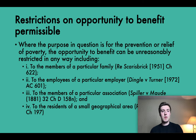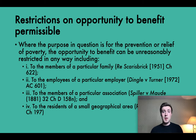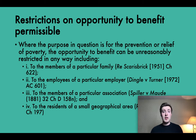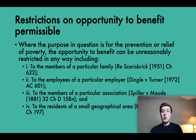First of all, poverty. Where the purpose in question is for the prevention or relief of poverty, the opportunity to benefit can be unreasonably restricted in any way and still extend to a sufficient section of the public, satisfying the public aspect of the public benefit test — including to the members of a particular family. So if your purpose is for the prevention or relief of poverty, the opportunity to benefit can be restricted to the members of a particular family, as in the case of Reece-Scarisbrick. In other words, a trust can be established for the purpose of relieving poverty amongst the settlor's relatives. This would not be permitted under the usual rule.